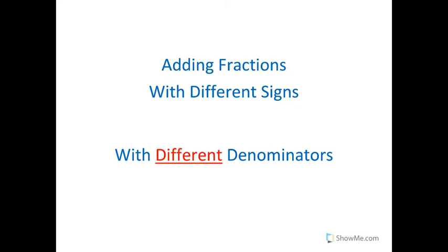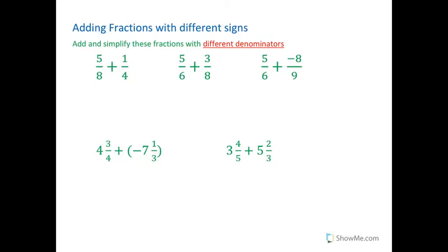This is adding fractions with different signs. What that means is that our fractions could be positive or negative. And then these are going to have different denominators which of course makes it a little bit more challenging. So let's take a look at the first set of problems. You can see the denominators are not the same. But in order to add fractions they must be the same.